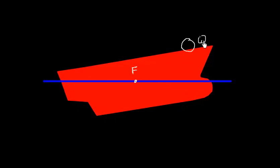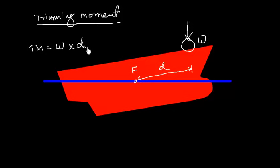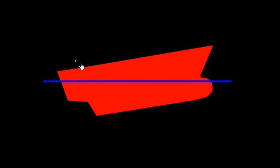Now if I load some weight W here, there will be a trimming moment. The trimming moment is the moment which will cause the trim. Since F is the center of flotation or the pivot point, and the distance of this weight W from the pivot point is D, then trimming moment is going to be W into D, in ton-meters, where W is the weight loaded and D is the distance of this weight from the center of flotation — by head, because this is forward.